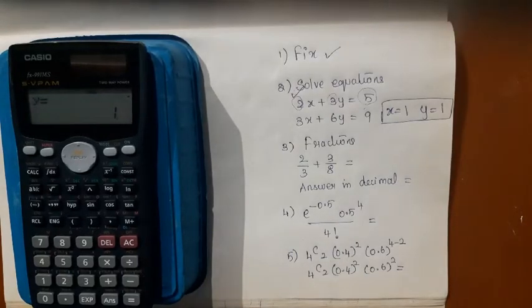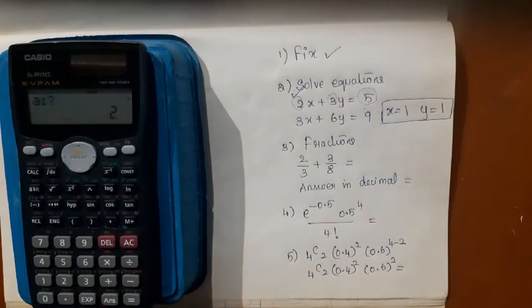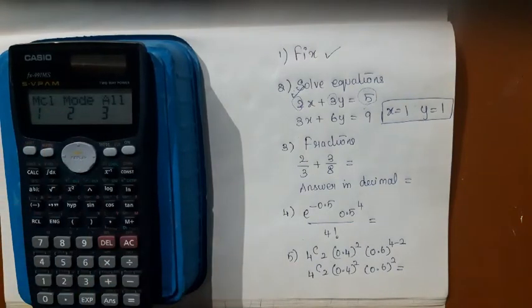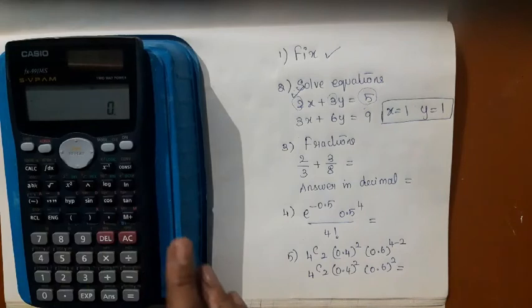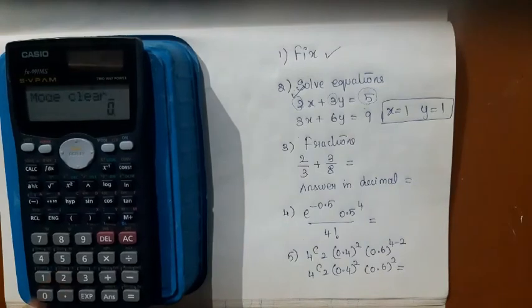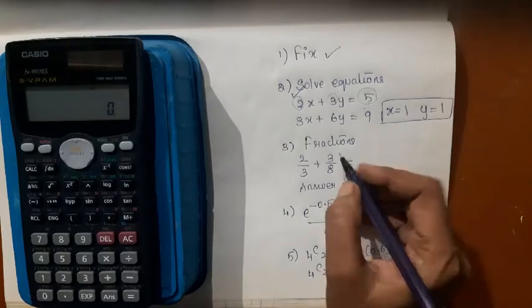Now that I have finished, I should come out of this mode. Press shift mode, clear the mode. Press equal to, AC. Only then you will come out of the equation mode.